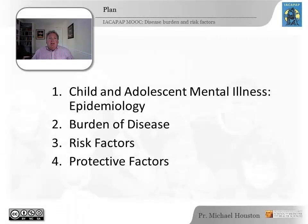There are four main topics I hope to cover today. First, the epidemiology of child and adolescent mental illness. Then, the concept of burden of disease and how it relates to psychiatric illness in children. Thirdly, we'll discuss the major risk factors for mental illness in children and adolescents. And lastly, the important topic of protective factors.